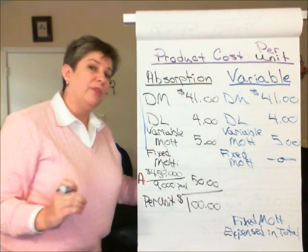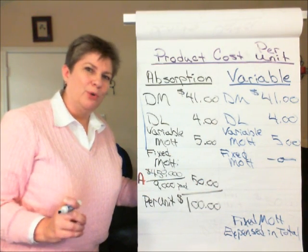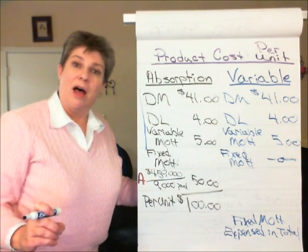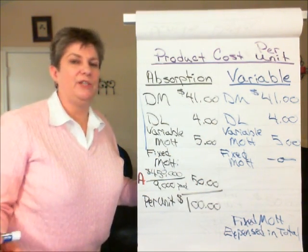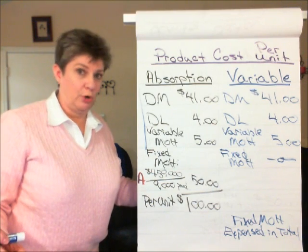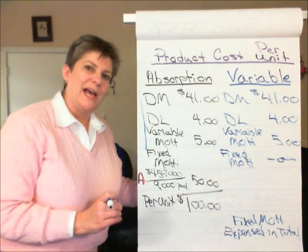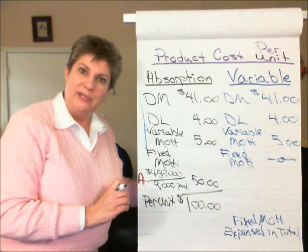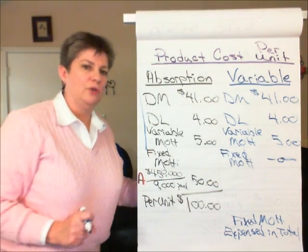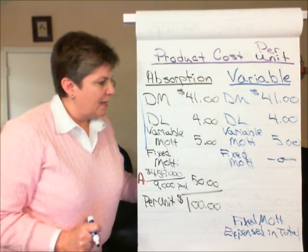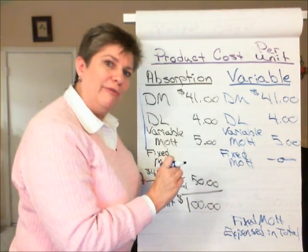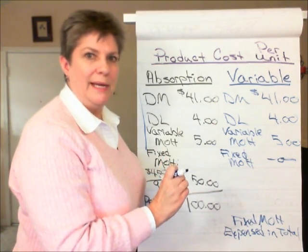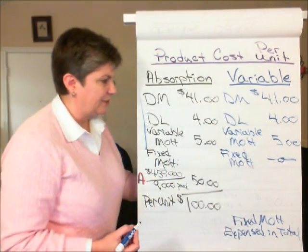This is why variable costing is not GAAP and cannot be used for tax purposes — because it doesn't allocate part of fixed manufacturing overhead to the product. But it is useful for internal decision making and for cost-volume-profit analysis.